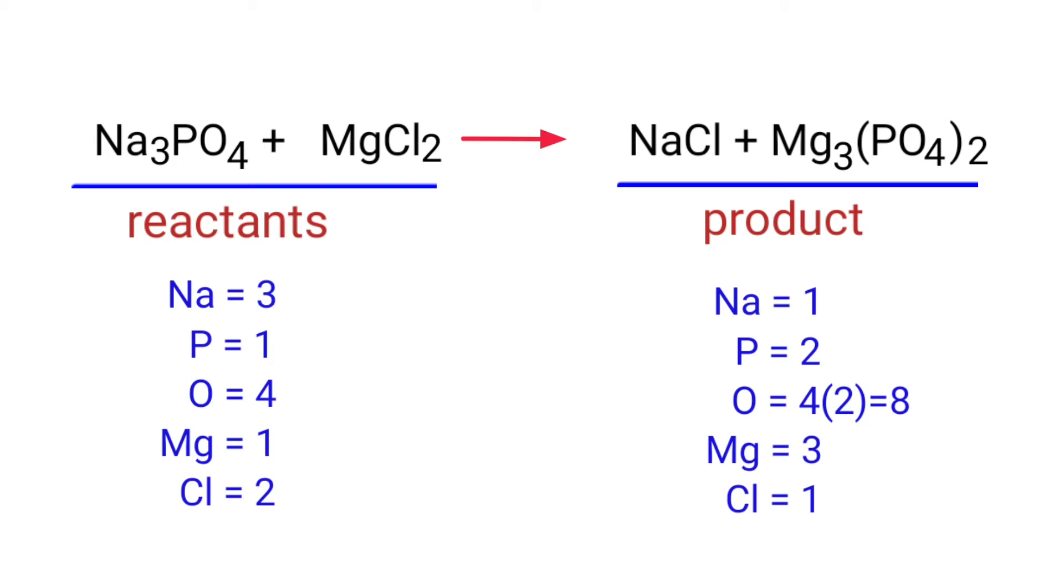The number of atoms are not balanced on both sides. To balance the chemical equation we need to make use of coefficients. A coefficient is a number that we place in front of a chemical formula.